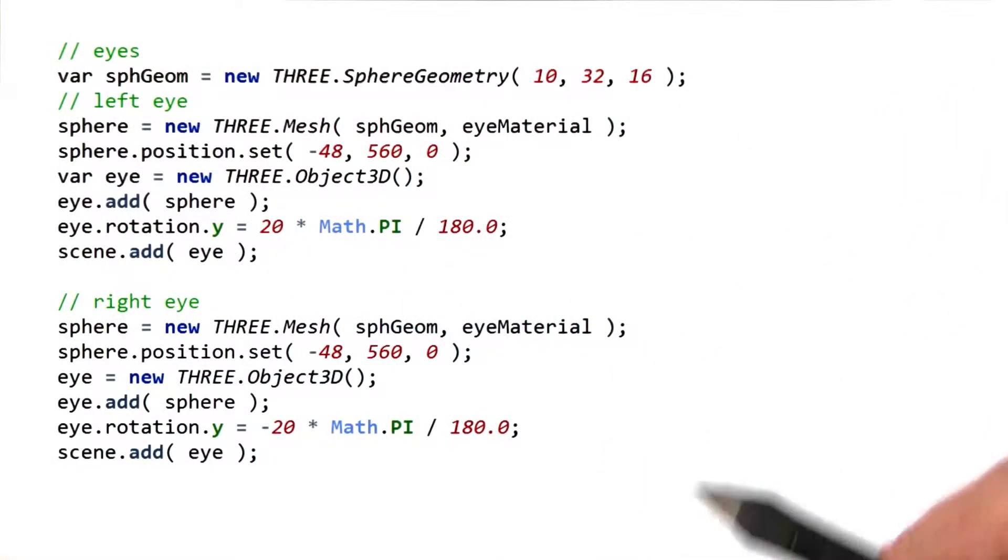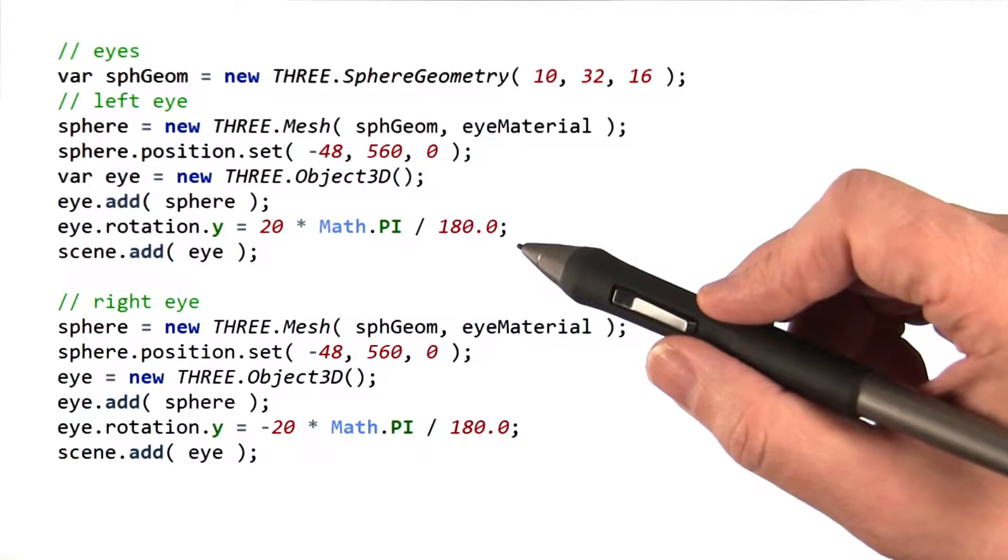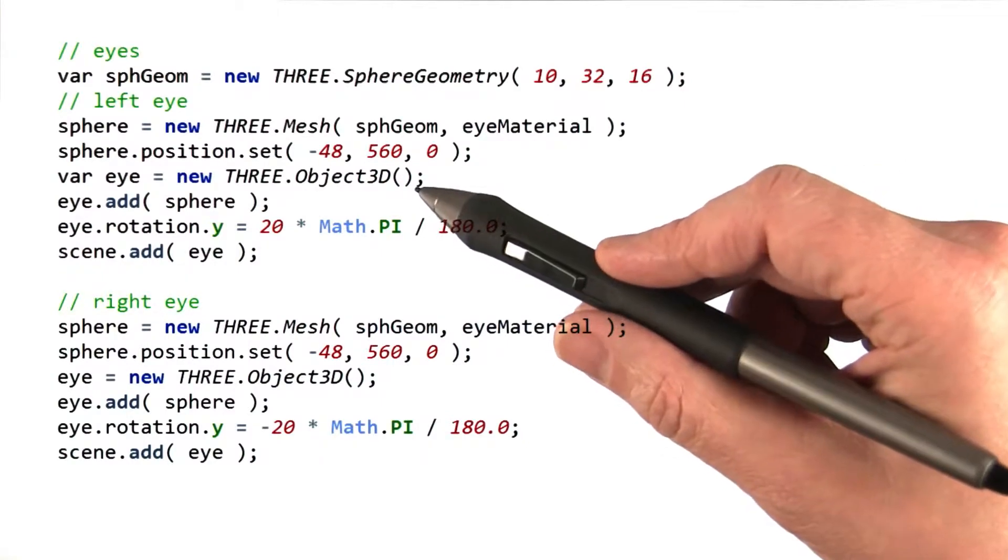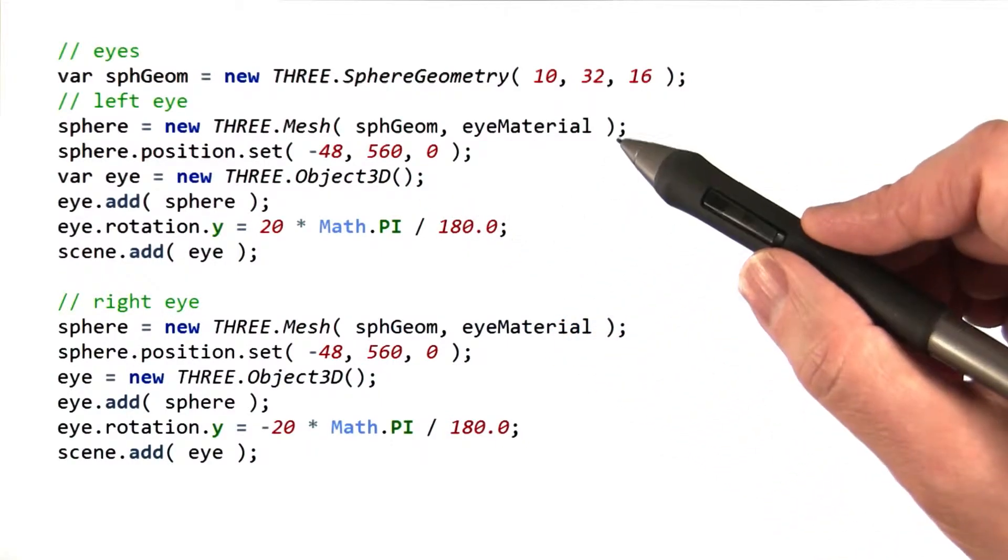The eyes are a little more interesting in that first you have to translate to position, then rotate. To do this, you have to make an object 3D so that you can do the rotation after the translation.